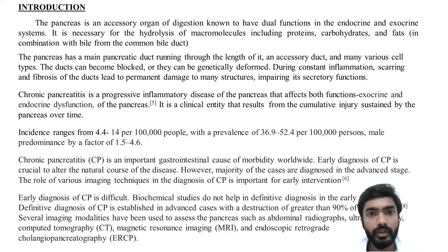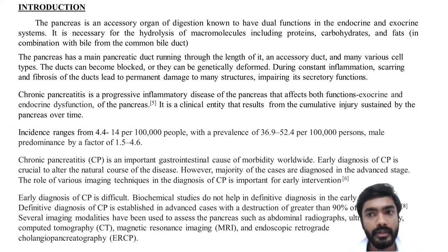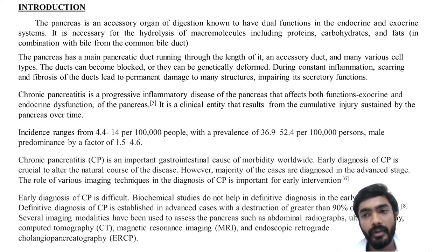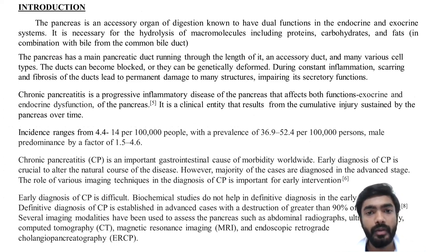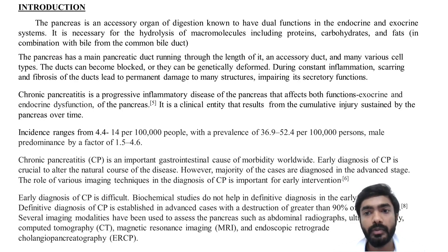The pancreas is an accessory organ of digestion known to have dual function in the endocrine and exocrine systems. It has a main pancreatic duct running through the length of it, an accessory duct, and various cell types. The ducts can become blocked or genetically deformed. During constant inflammation, scarring and fibrosis of the ducts lead to permanent damage to many structures, impairing secretory functions. Chronic pancreatitis is a progressive inflammatory disease affecting both exocrine and endocrine functions, resulting from cumulative injury sustained by the pancreas over time.